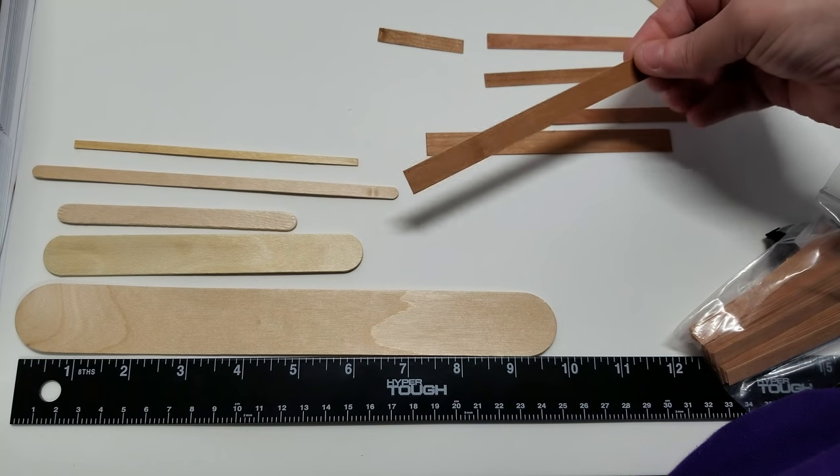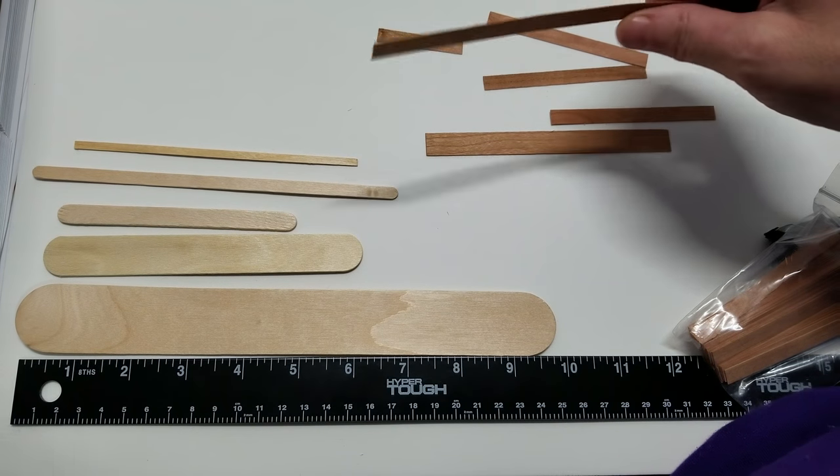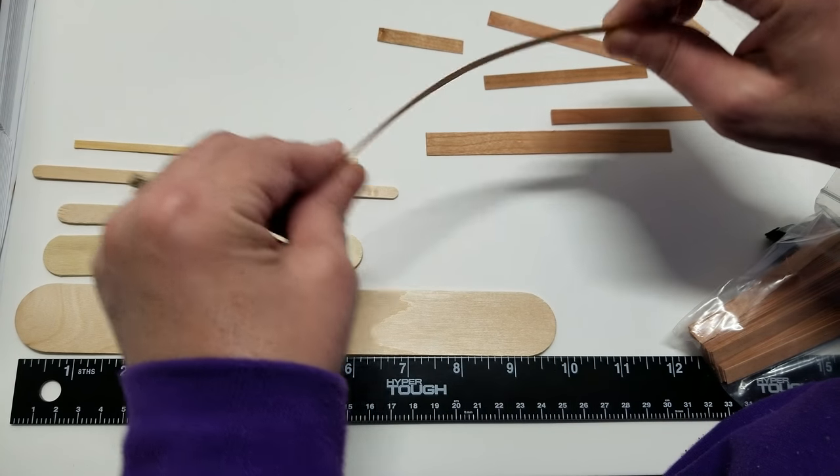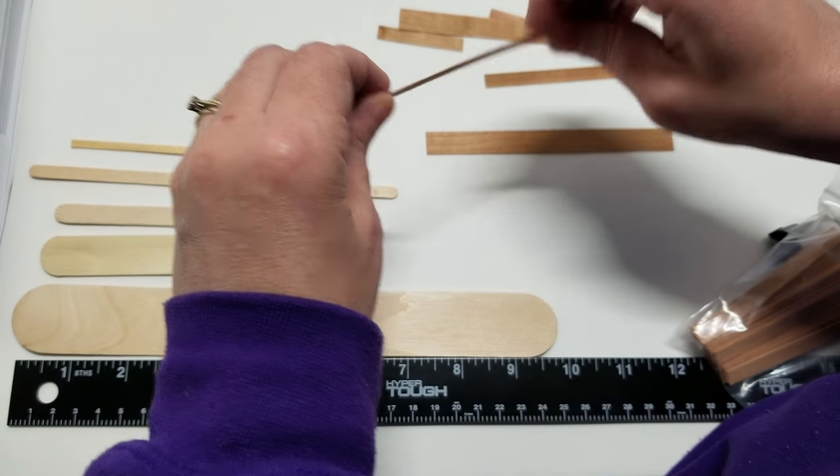So you can get 50 pieces of flooring, which I don't think it'll be that much to do your whole house. However, if you notice, this is very flimsy, but once it's glued down it shouldn't matter.